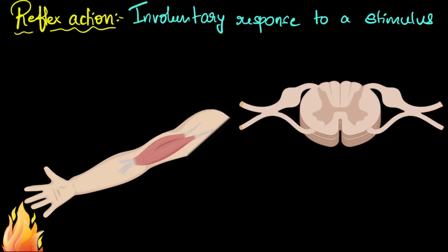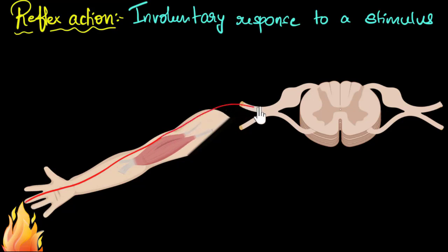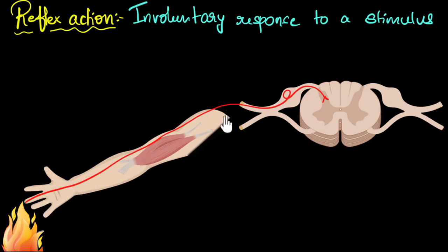So the moment the temperature of my finger increases, that is detected by a neuron present over here. That neuron converts that heat into an electrical signal, and that electrical signal is sent to the spinal cord. This single neuron — and if you're wondering, can a cell be this long? The answer is yes. Neurons are the longest cells in our body. So that single neuron takes the electrical signal and sends it to the spinal cord.